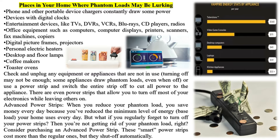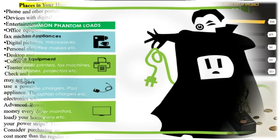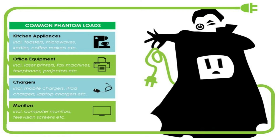At the end of the day, though, the best way to ensure that an appliance or device isn't a source of phantom loads is to unplug it altogether. It can't pull electricity from the grid if it's not plugged into an outlet, after all.